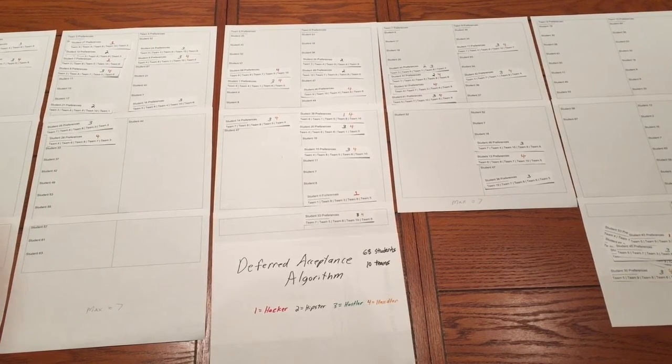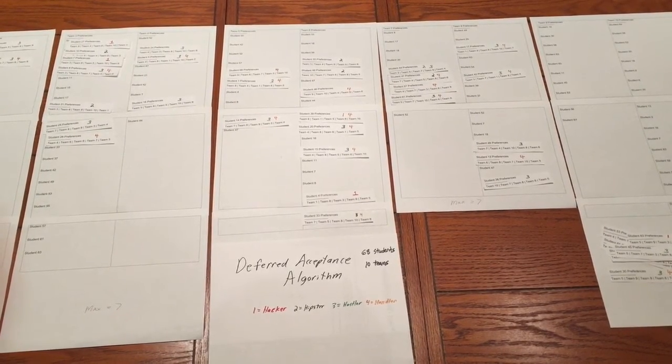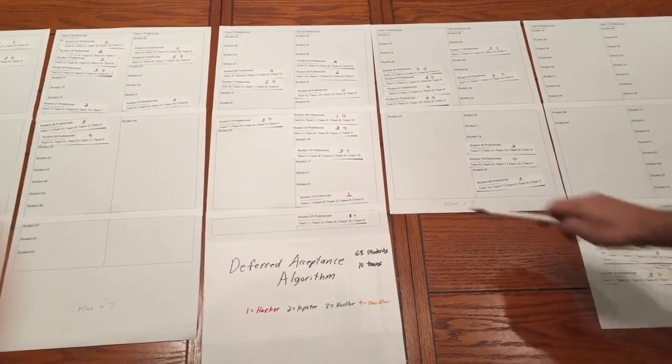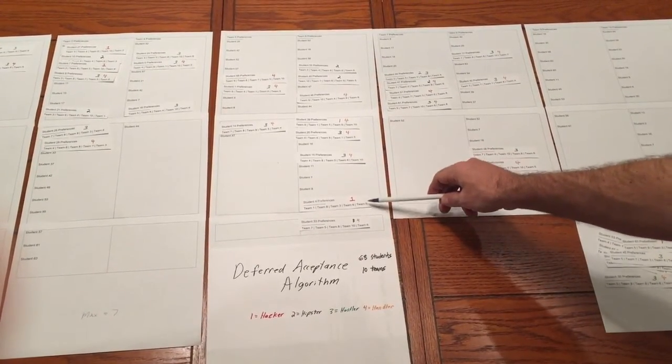Now we're going to demonstrate the algorithm. Matching happens in four phases. In Phase 1, we're going to place the students on their teams.